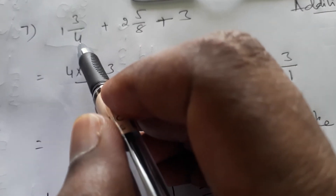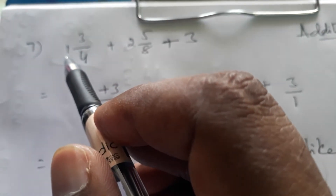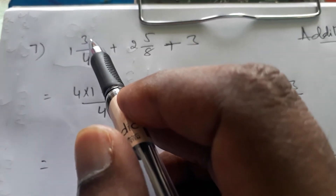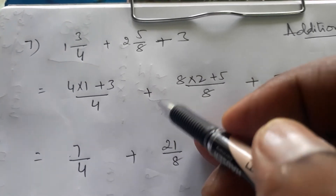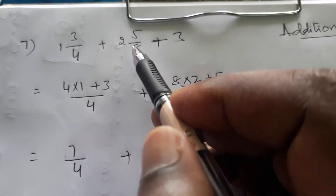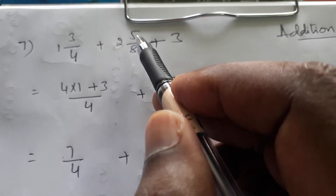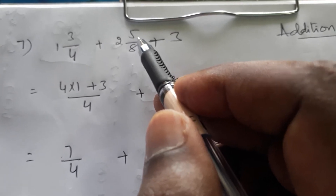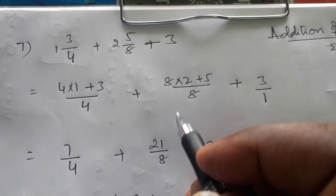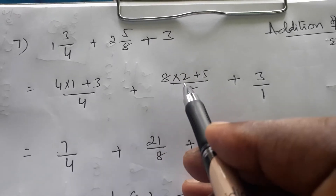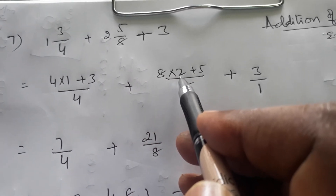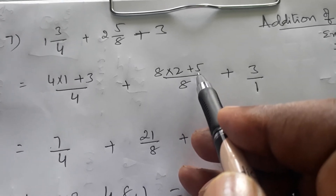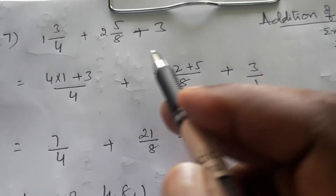Now for the second mixed fraction 2 5/8: multiply the denominator and the whole number — 8 × 2 = 16 — then add the numerator 5. So 16 + 5 = 21. Write the total, 21, in the numerator. The denominator repeats as it is — so 2 5/8 converts to 21/8.